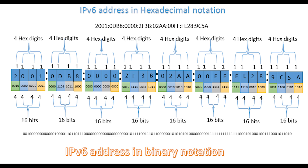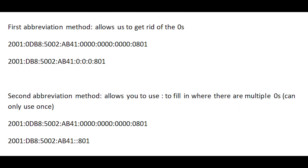Since IPv6 is longer than IPv4, it supports two types of abbreviations to make things a little bit easier. Both abbreviations work with zeros. The zeros have to be leading, meaning they can't be between anything else within a nibble.